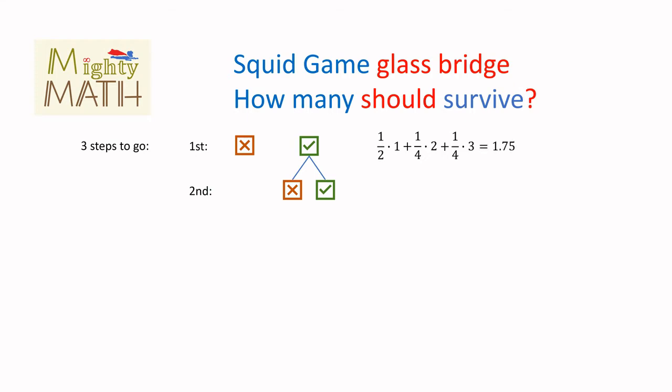What do we get? If there are three steps to go, every player, in average, gives information about 1.75 steps.